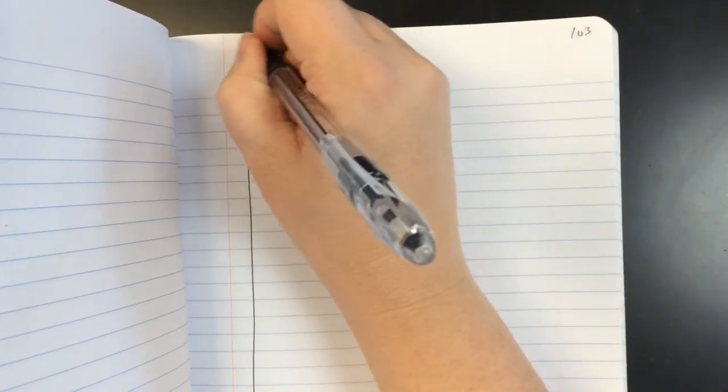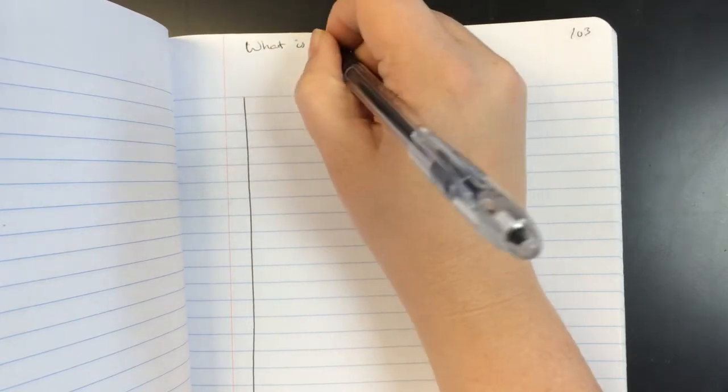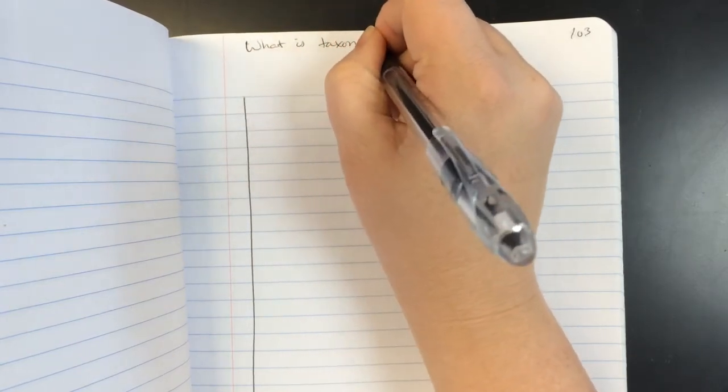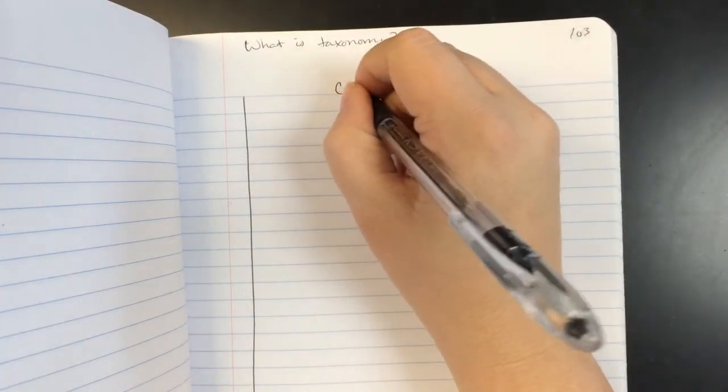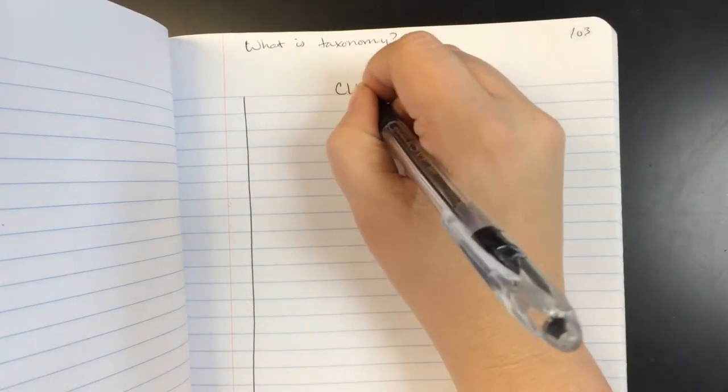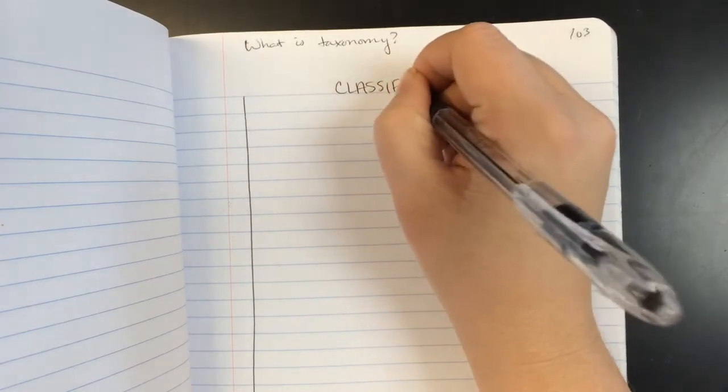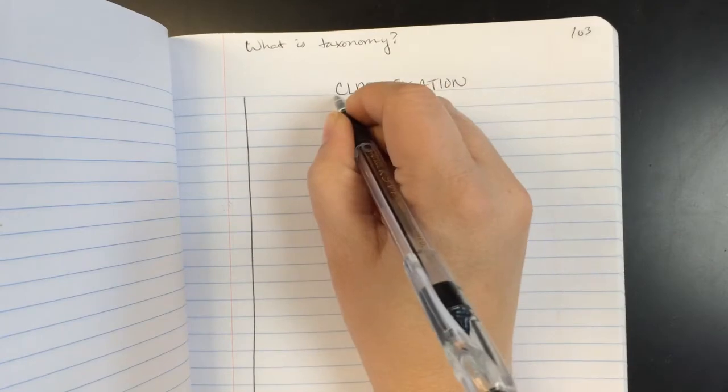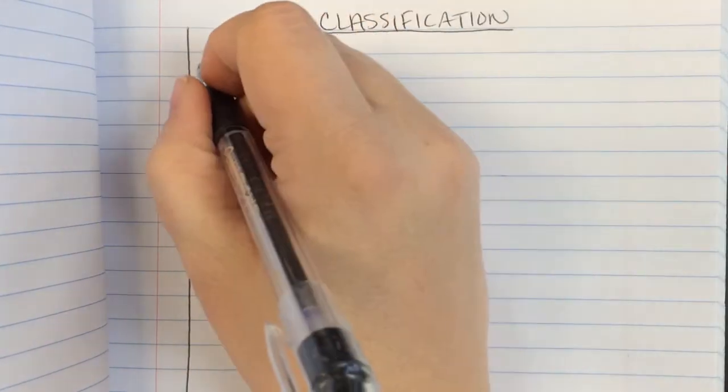Draw your line down the side. Bring this one pretty far down and just keep your summary short and sweet because we've got a lot of notes that we're going to do in this one. So, classification. Actually, let's start out with our question first. What is taxonomy?